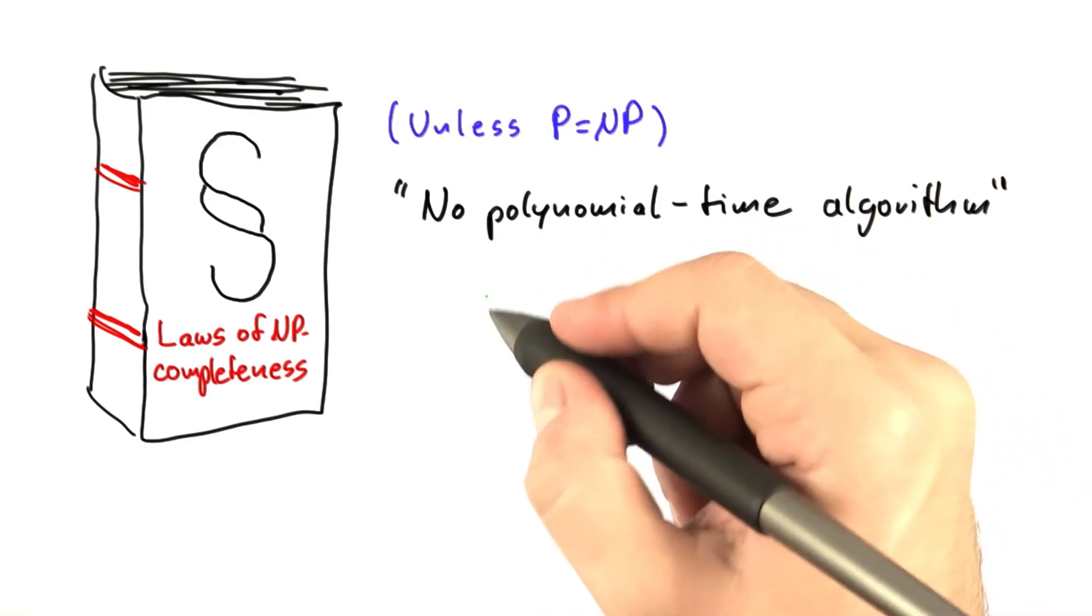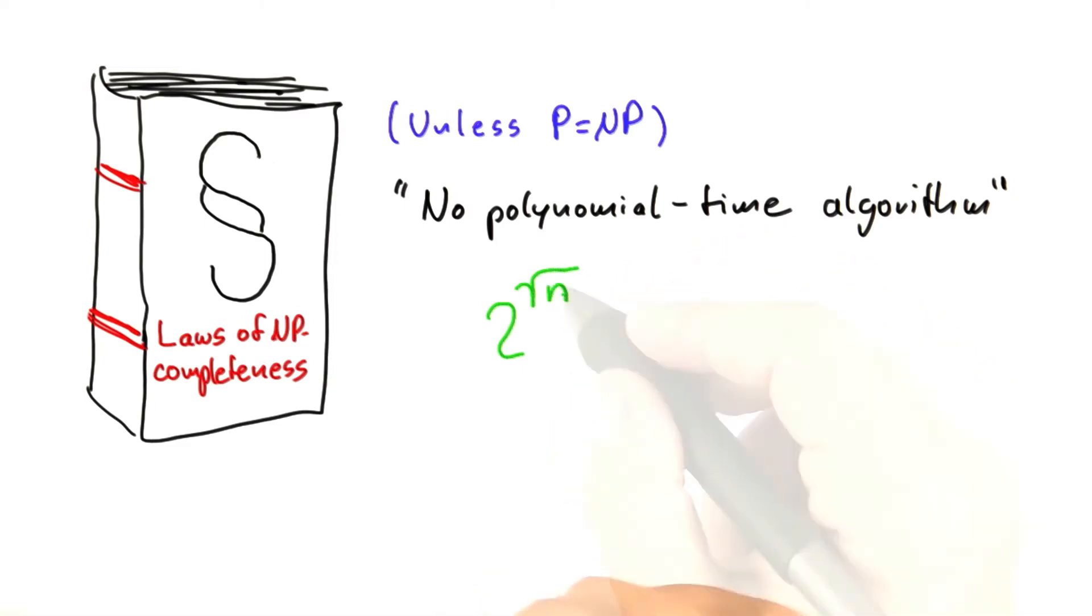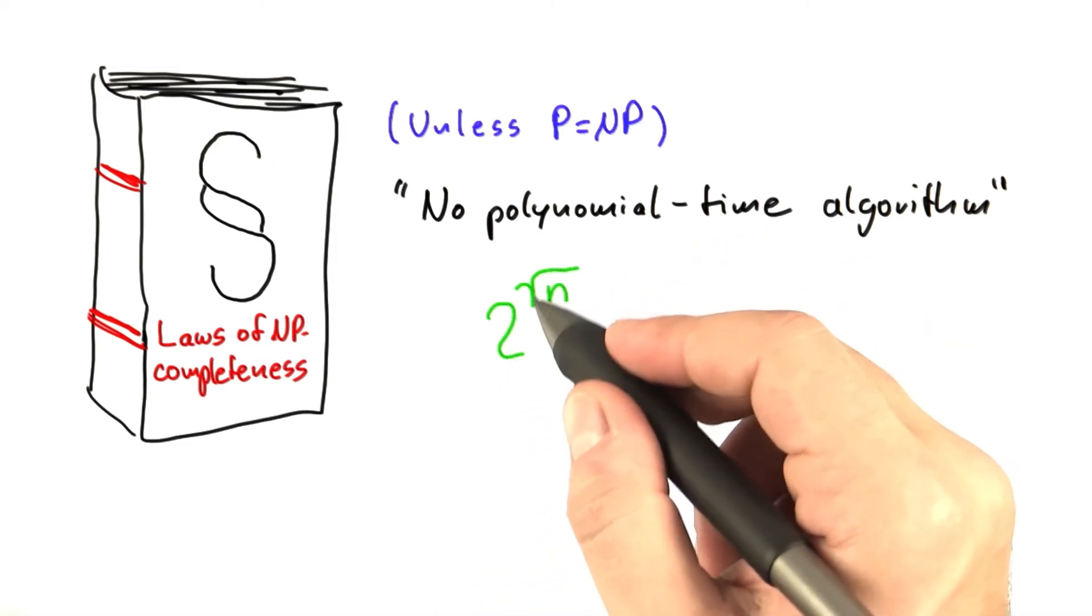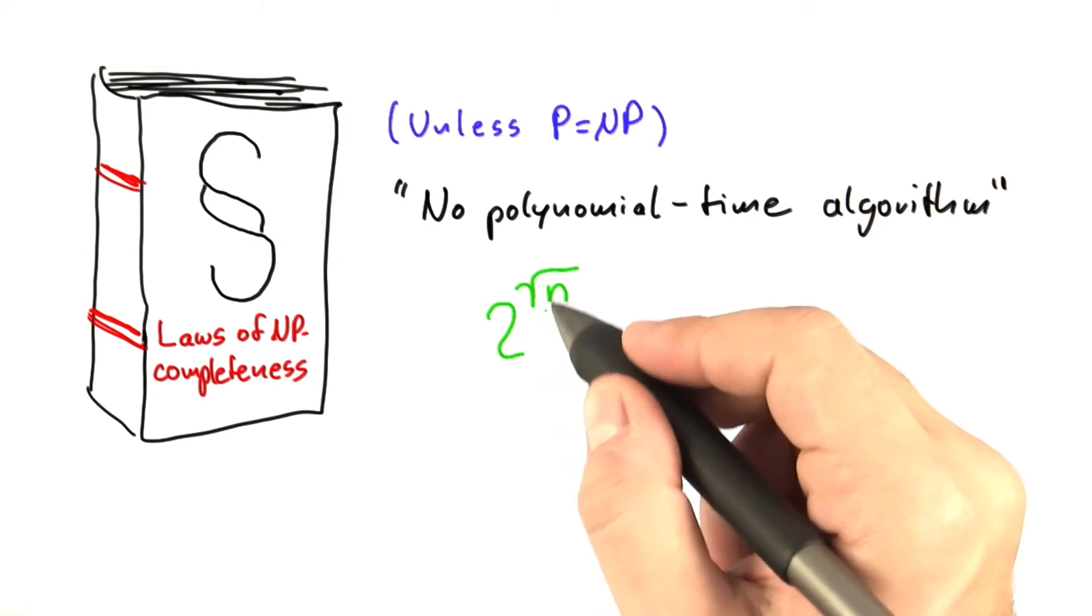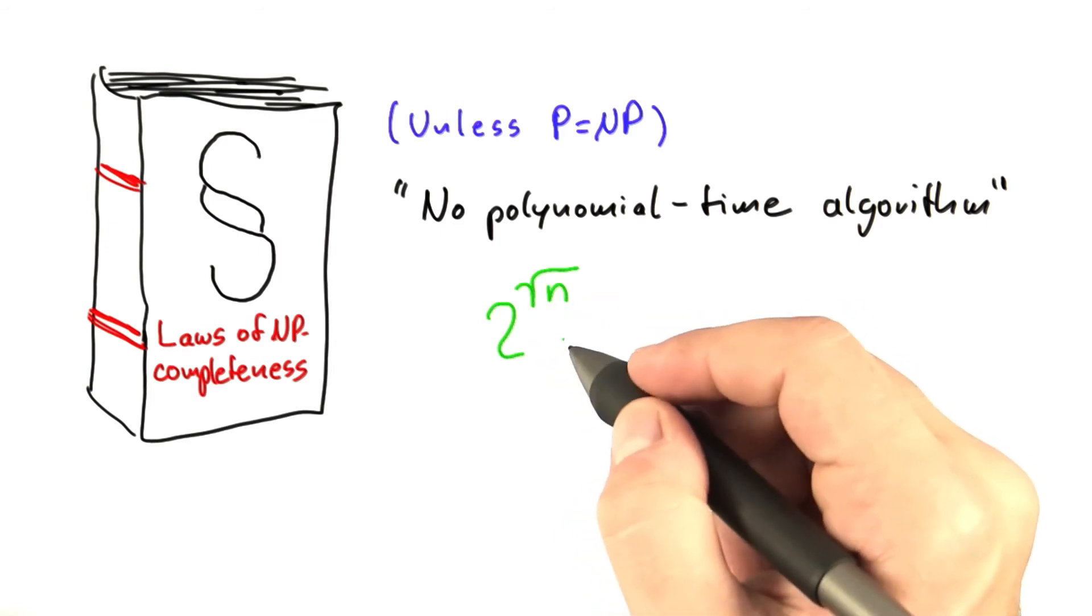What do I mean by that? Well, what about a running time like 2 to the power of the square root of n? It's not exponential time. It's called sub-exponential because you don't have the n as it is up here in the exponent. But it's also not polynomial time because you have some function of n up here in the exponent.